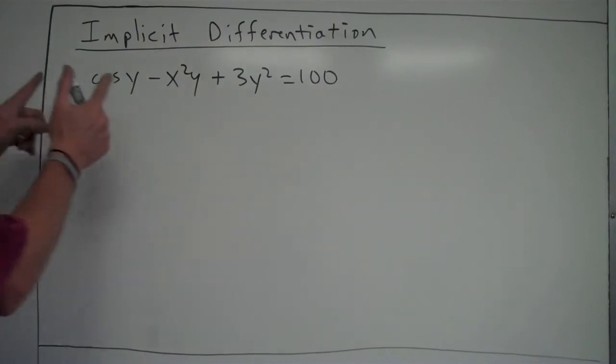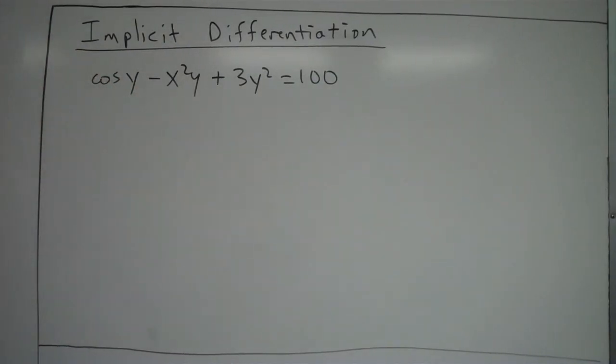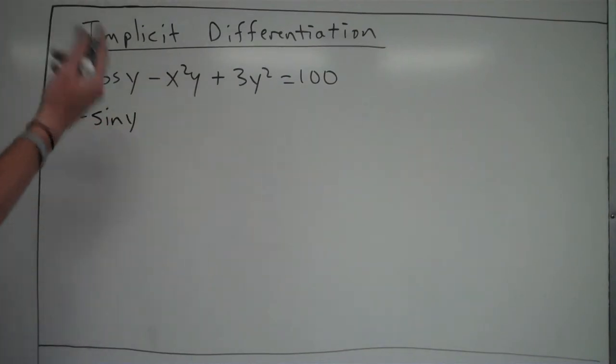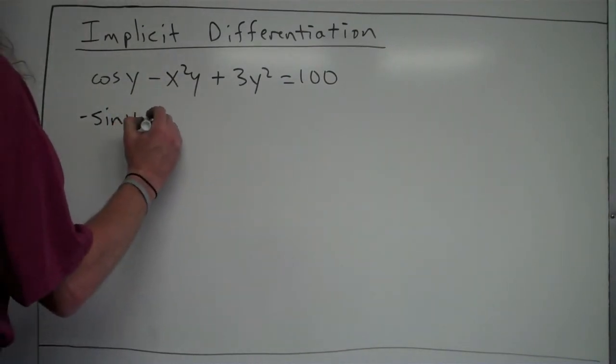So we start out cosine of y. The derivative here, first thing is the same as always before, just the derivative of cosine is negative sine, so it's going to be negative sine y. But then, since we took the derivative of y, we're going to multiply by dy over dx.